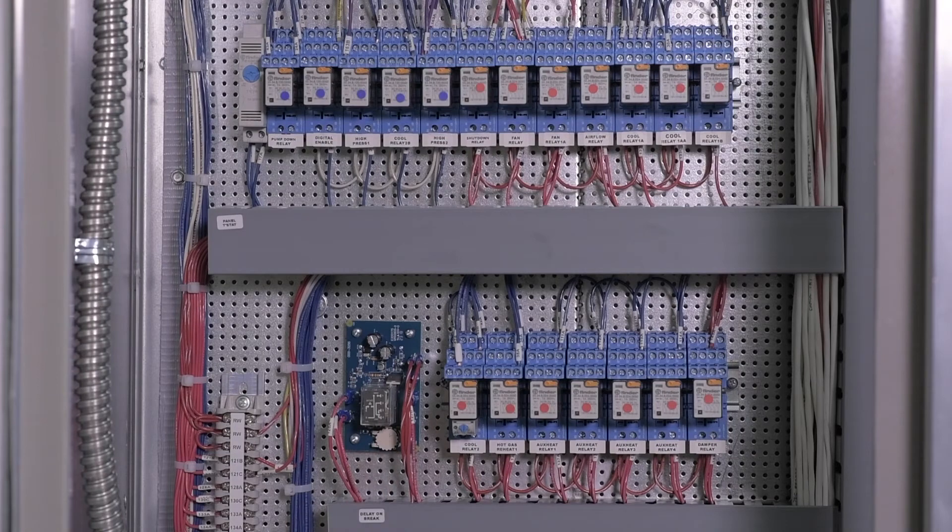The circuit board with the relay and the dial is a delay on brake timer. We use it when the controller stops calling for the fan. It allows us to keep our supply blower on for three minutes to help cool down the heat exchanger.